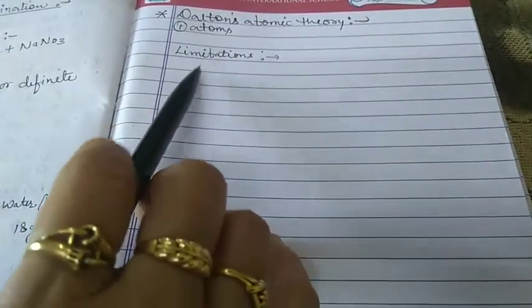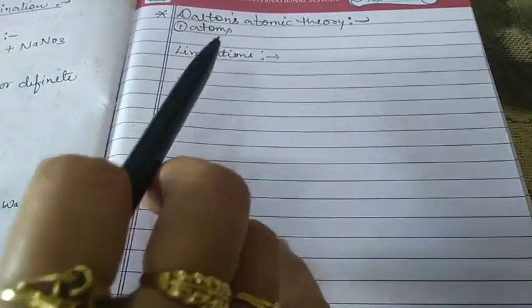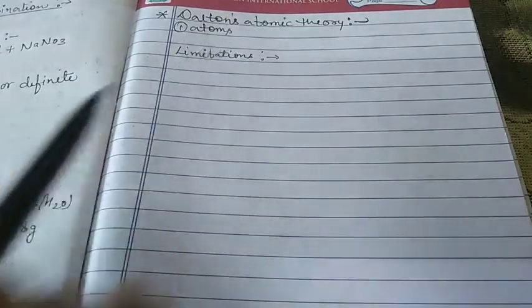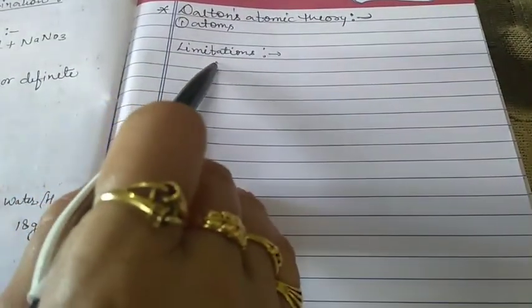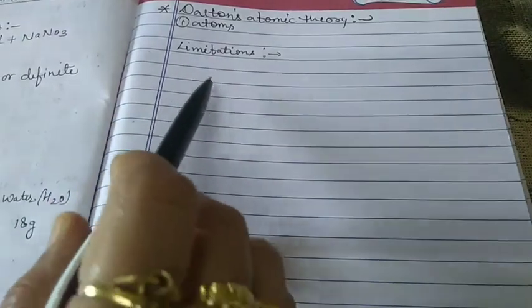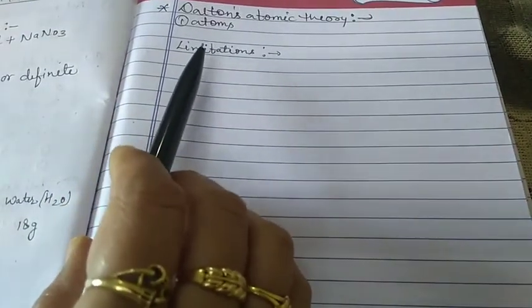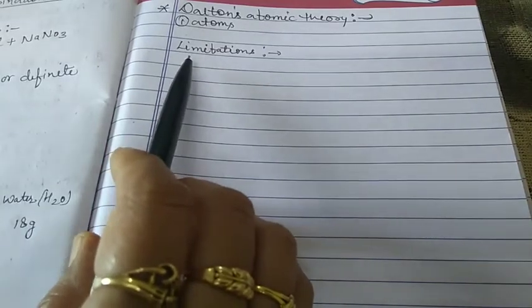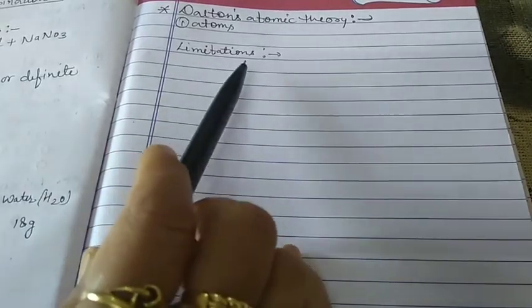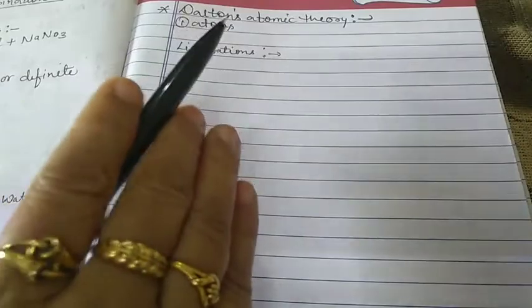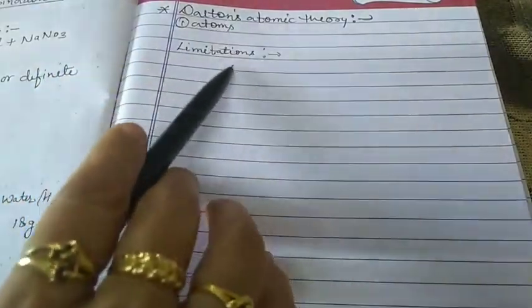The next limitation is that it does not explain the nature of the force that binds atoms together in a molecule. It shows the existence of molecules but does not explain why atoms combine, or which force holds atoms together to form a molecule. These are the limitations of Dalton's atomic theory. Notes for all these topics will be provided through the homework portal.